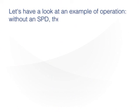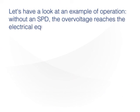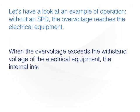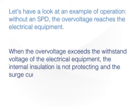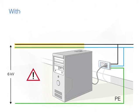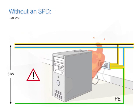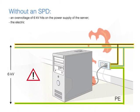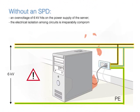Without an SPD, the overvoltage reaches the electrical equipment. When the overvoltage exceeds the withstand voltage of the electrical equipment, the internal insulation is not protecting and the surge current destroys the equipment. Without an SPD, an overvoltage of 6 kV hits the power supply of the server. The electrical isolation among circuits is irreparably compromised, and a discharge to ground is generated.